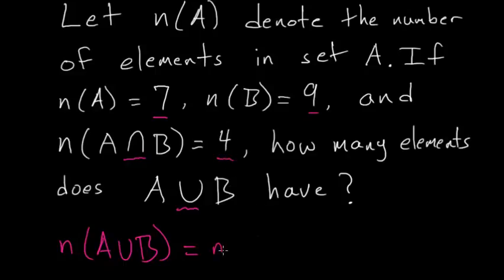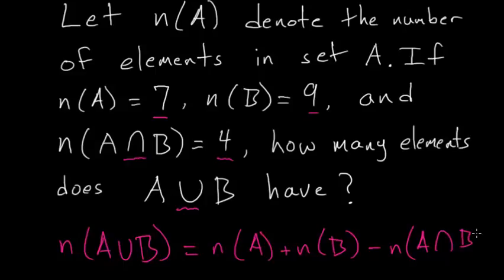So the union is just the number of elements in set A plus the number of elements in set B minus the number of elements in the intersection of the two sets.